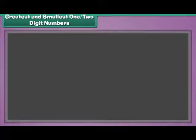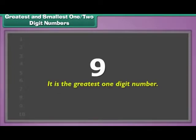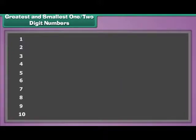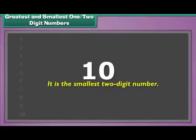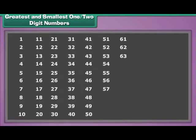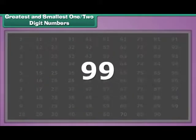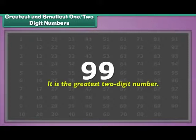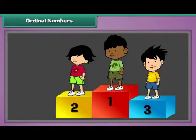The last one-digit number is nine — it is the greatest one-digit number. The first two-digit number is ten — it is the smallest two-digit number. The last two-digit number is ninety-nine — it is the greatest two-digit number.